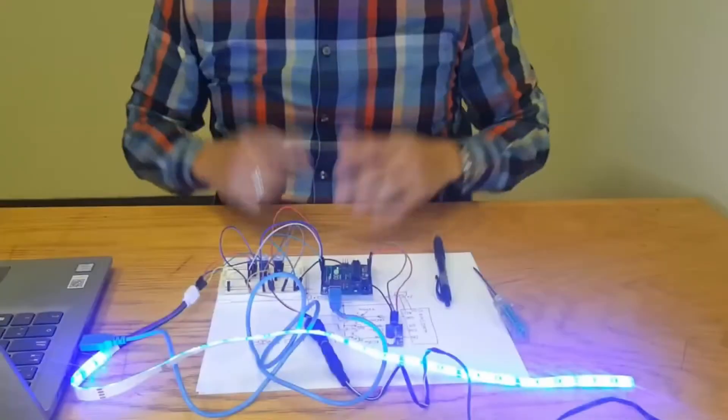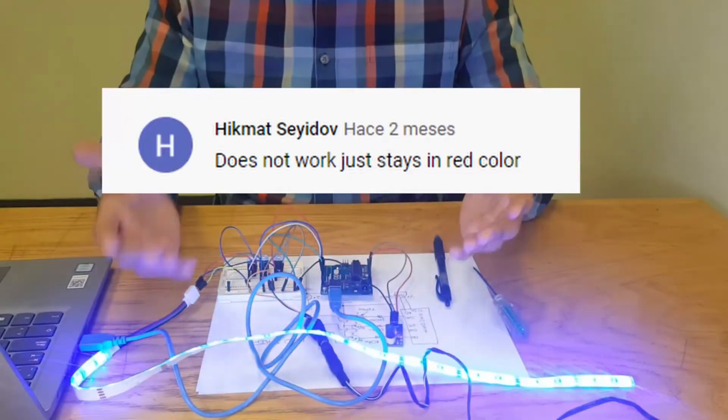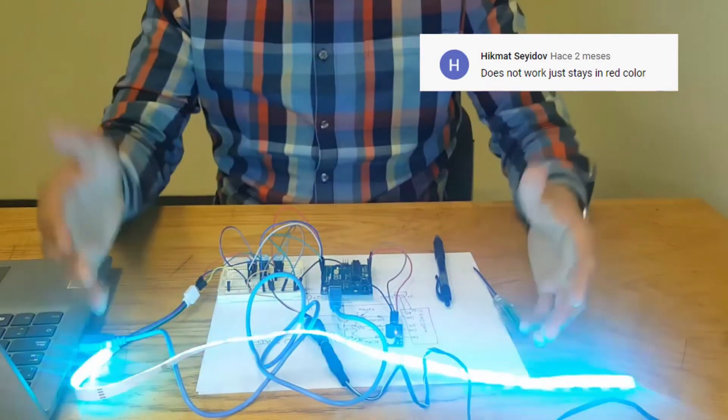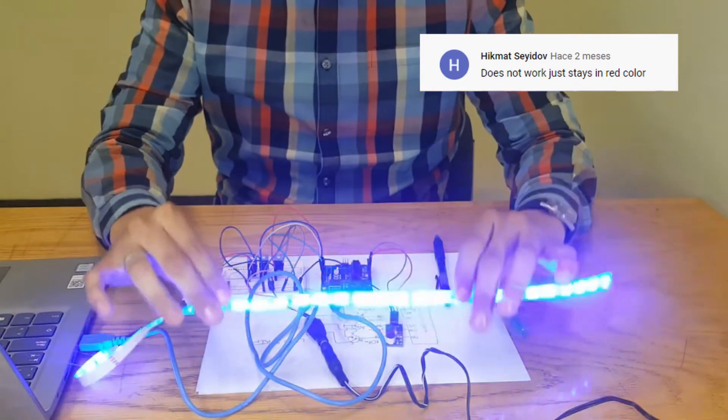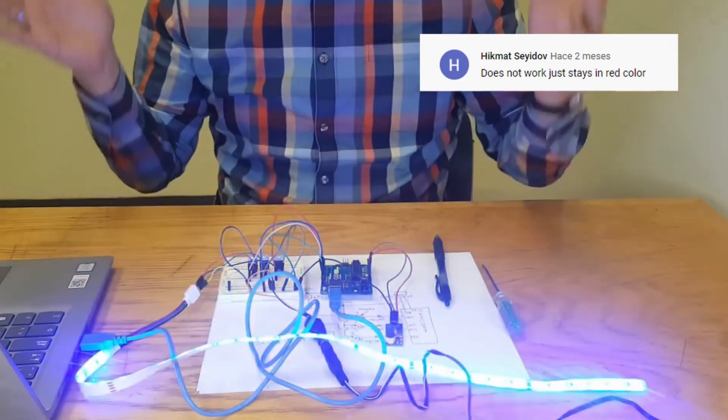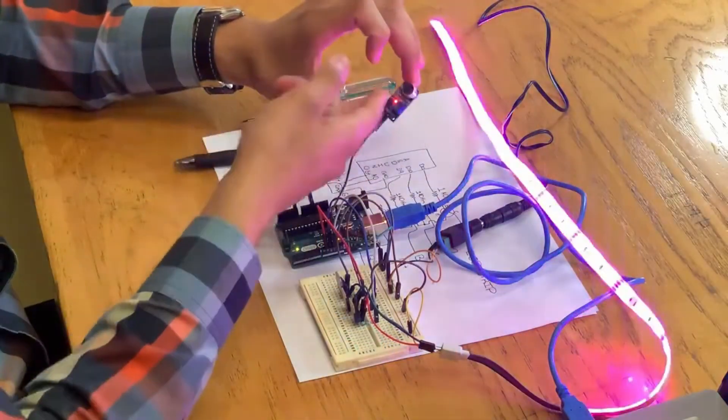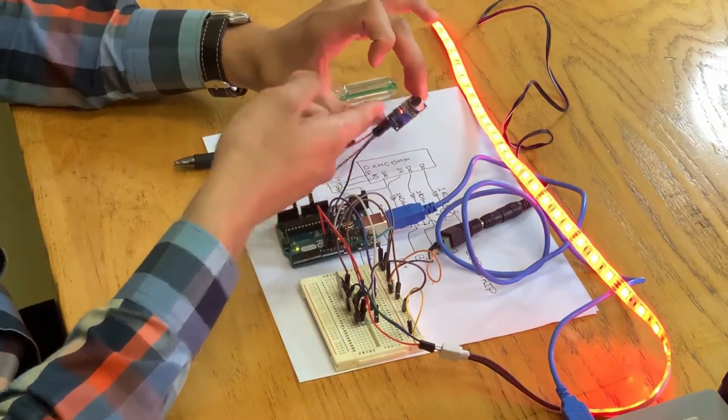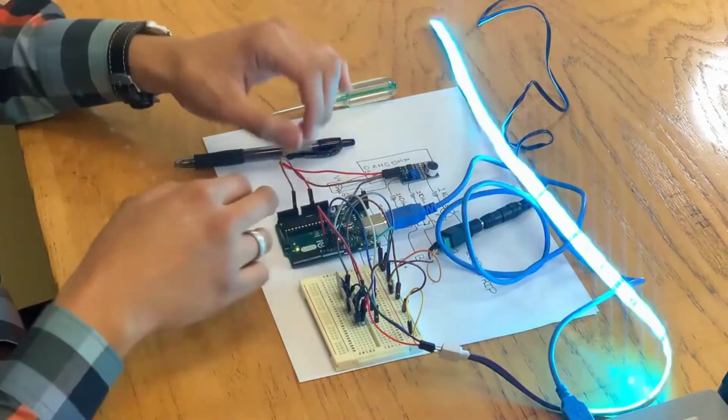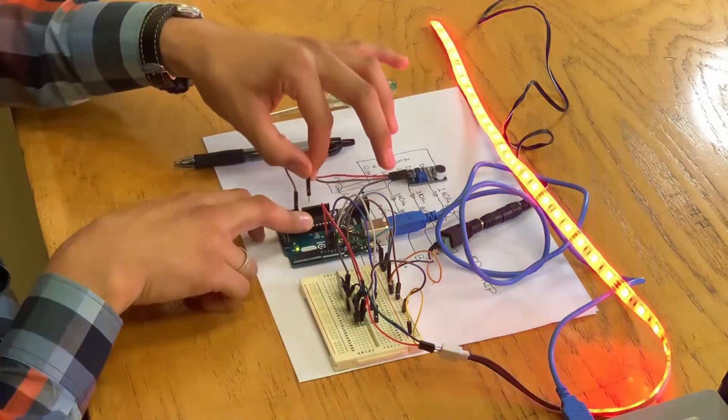Finally, some of you guys had some troubles with this project, so we'll do some troubleshooting to help you all. First, if the strip is only on red, then check the cable from the sound sensor. Make sure to connect them according to the diagram found on Brainsmash GitHub and Instagram.